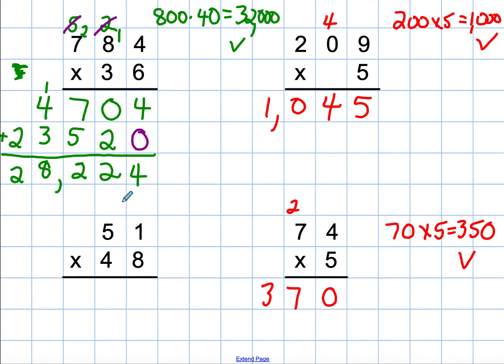Finally, 51 times 48. I'm going to round my 51 down to 50, round my 48 also to 50, rounding it up. 5 times 5 is 25, plus the two zeros. So it's 2,500 for my estimate.